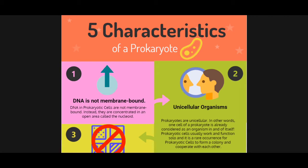As you can see in this diagram I have prepared, there are five characteristics of a prokaryote. Number one: DNA is not membrane-bound. As we all know, all forms of life have DNA in them. DNA in prokaryotic cells is not membrane-bound because it is not inside a nucleus. Instead, it is concentrated in an area called the nucleoid. That's what makes it different from a eukaryotic cell.